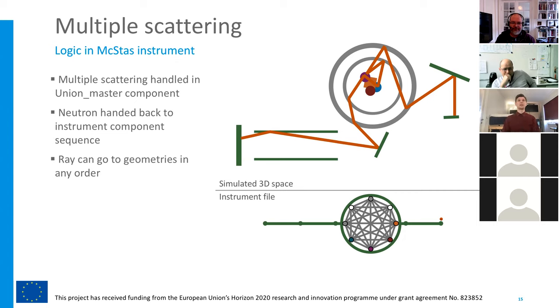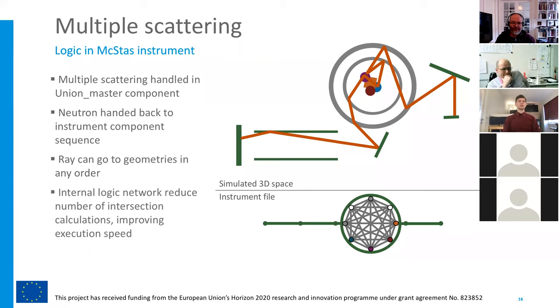There's actually a network being constructed in the Union Master that removes all the impossible connections. For example, you can't go from the outside environment straight into the sample. You have to go through the vacuum first. So it removes that connection. By slowly removing all of those unnecessary connections, we end up with a much simpler logical network. And this is the trick that ends up with much faster simulations than otherwise. This is still something you can run on your laptop with no problems. This is still relatively fast simulations.